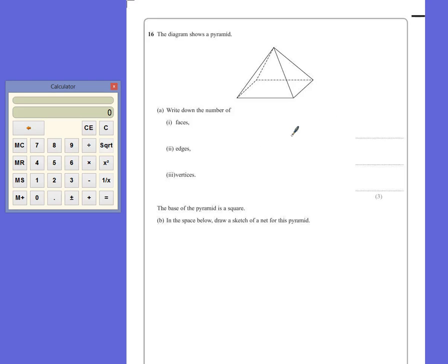The face is a 2D shape that's on the side of a 3D shape. So the faces would be the triangle at the front and back side and the square at the bottom. So that's five different faces.